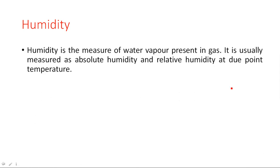Humidity is the measure of water vapor present in a gas or environment. It is usually measured as absolute humidity, relative humidity, and at the dew point of temperature. You can measure humidity in three different ways: absolute humidity, relative humidity, and specific humidity — all calculated at the dew point of temperature.